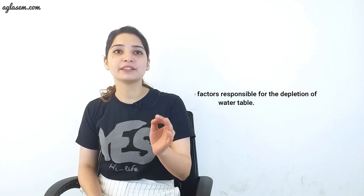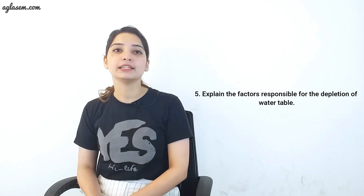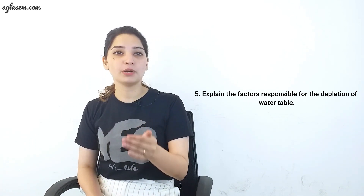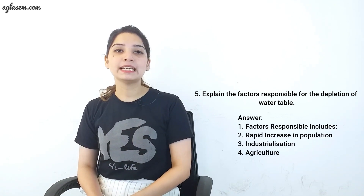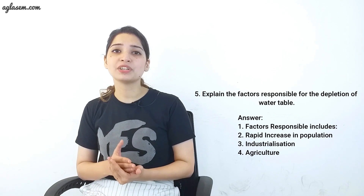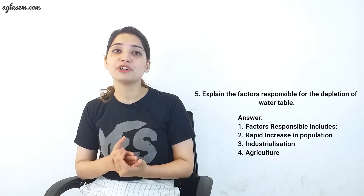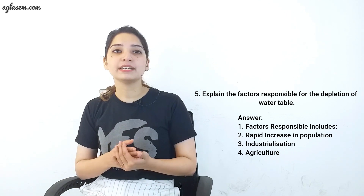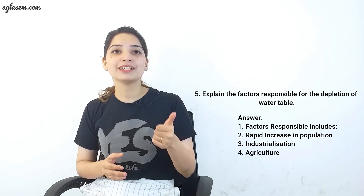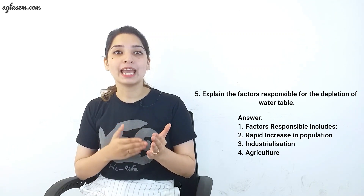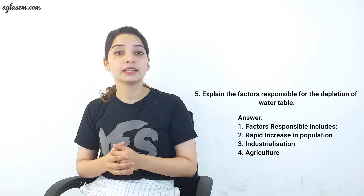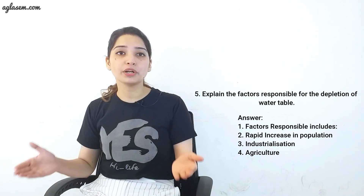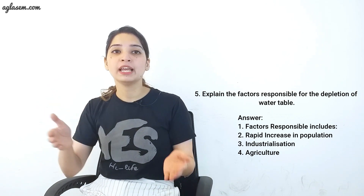Question 5: Explain the factors responsible for the depletion of the water table. Major factors are: first, rapid increase in population — more people means greater demand for water for domestic and drinking purposes, reducing the water table; second, industrialization — industries need a lot of water for operations including manufacturing and production; third, agriculture — growing crops requires a lot of water, resulting in further depletion of the water table.